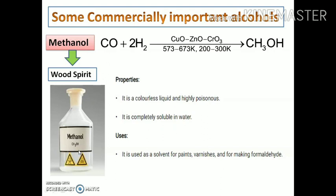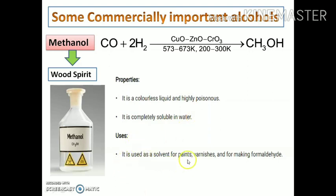The next topic is commercially important alcohols. The first is methanol, which can be prepared by heating carbon monoxide with hydrogen in the presence of copper oxide, zinc oxide and chromium oxide at 573–673 K. Methanol is also known as wood spirit. It is a colorless, highly poisonous liquid, completely soluble in water due to hydrogen bonding, and is used as a solvent for paints, varnish, and in making formaldehyde.